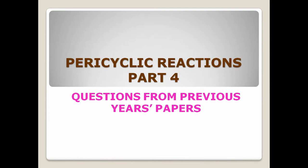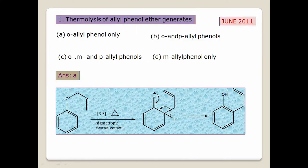Today's topic is pericyclic reactions — questions from previous papers. The first question: in competition exams you will get MCQ questions — multiple choice questions. So 'thermolysis of allyl phenyl ether generates' — they will provide four answers and you choose one right answer. Sometimes by practice what I suggest is first you have to eliminate two or three answers using a logical approach.